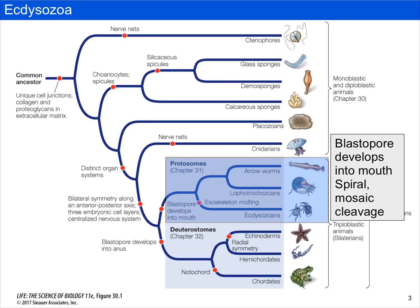Ecdysozoa are part of the protostomes group on the metazoan phylogeny. They are bilaterian animals in the protostomes, and as such, their blastopore develops into a mouth. Although protostomes are said to have spiral mosaic cleavage, ecdysozoans are one of the groups in which this varies — arthropods in general do their own thing and don't have spiral mosaic cleavage.